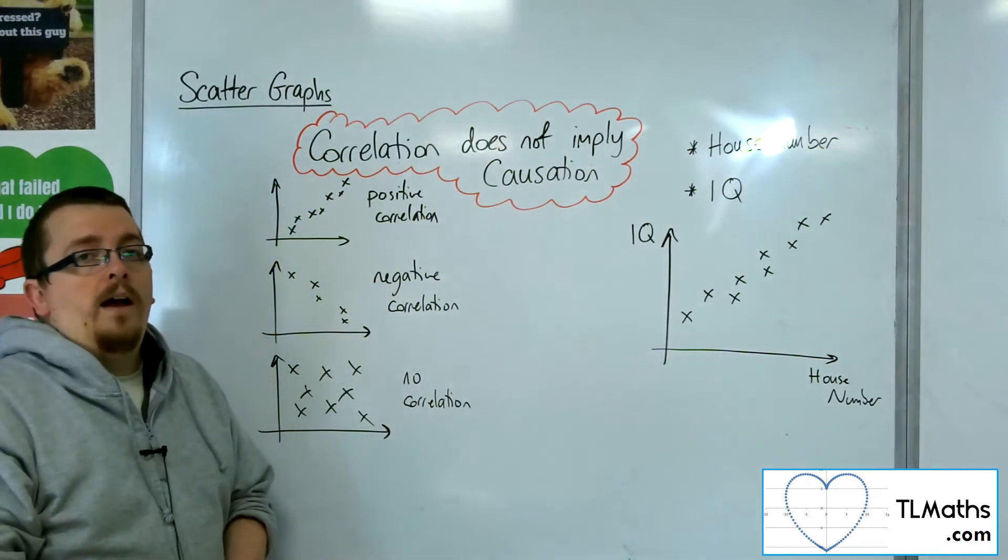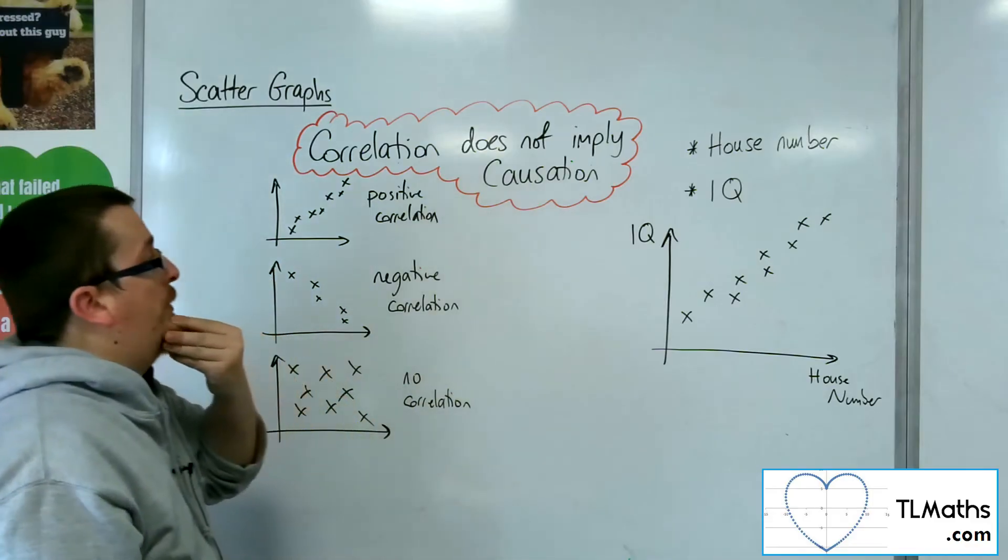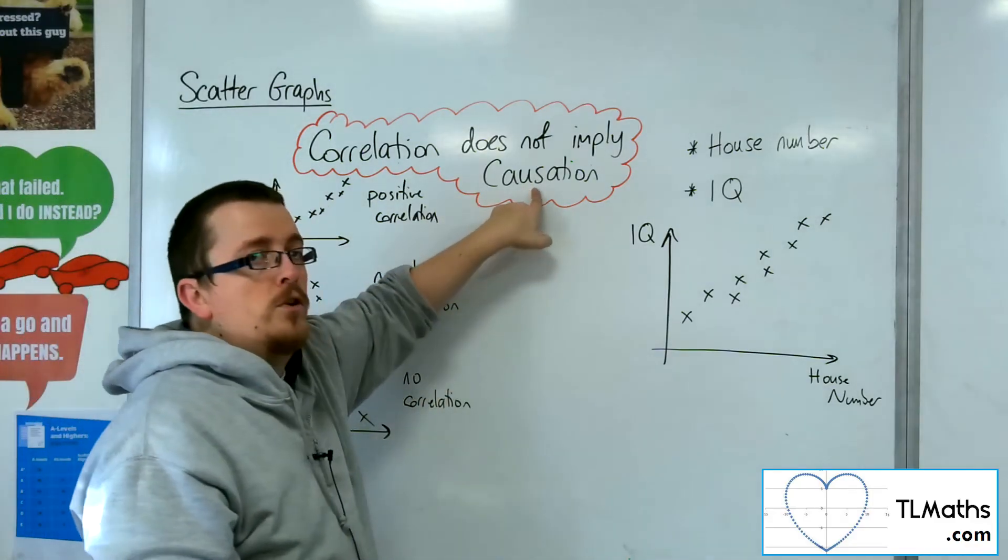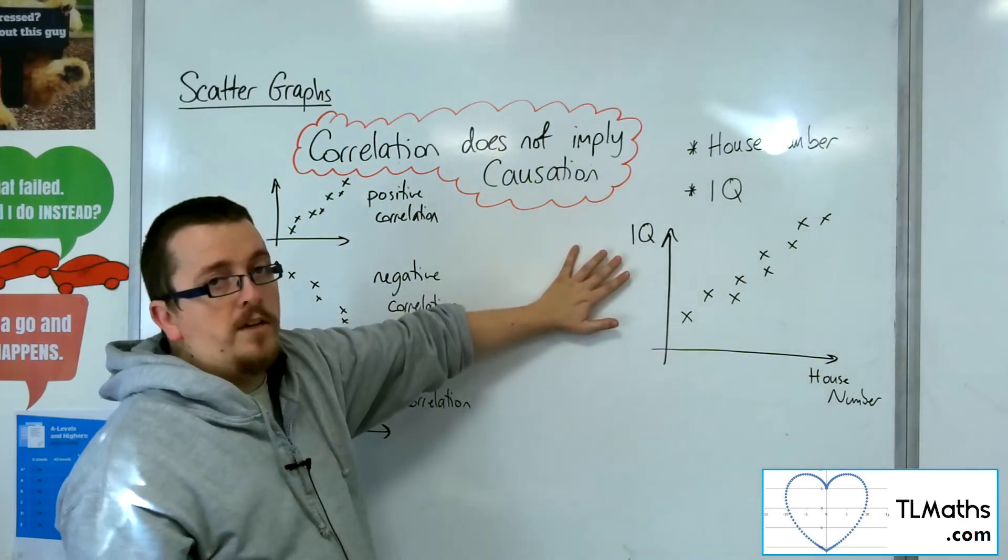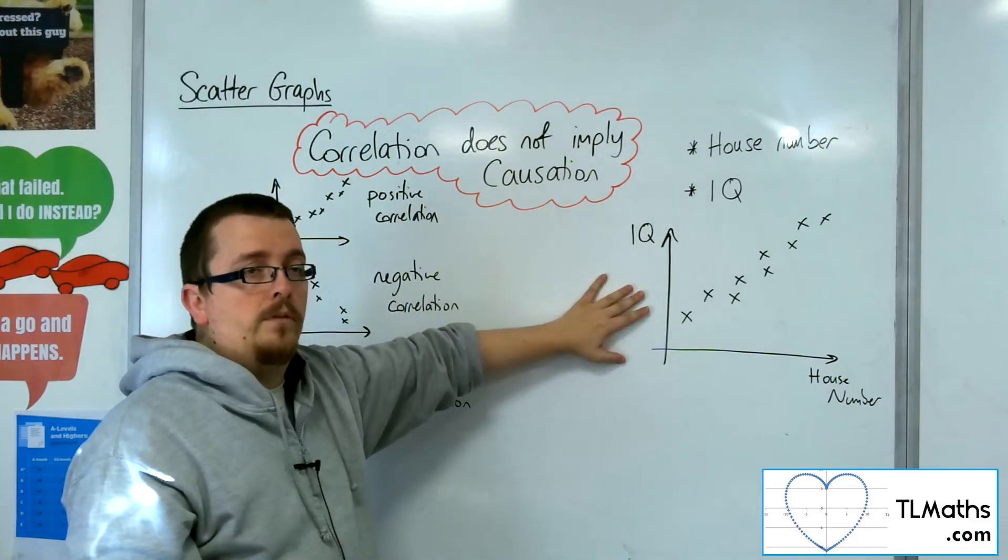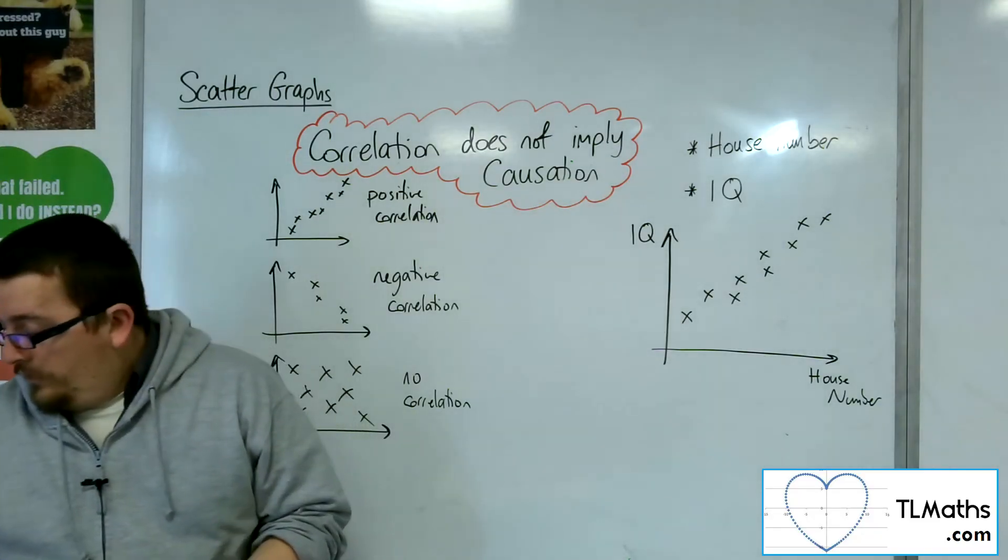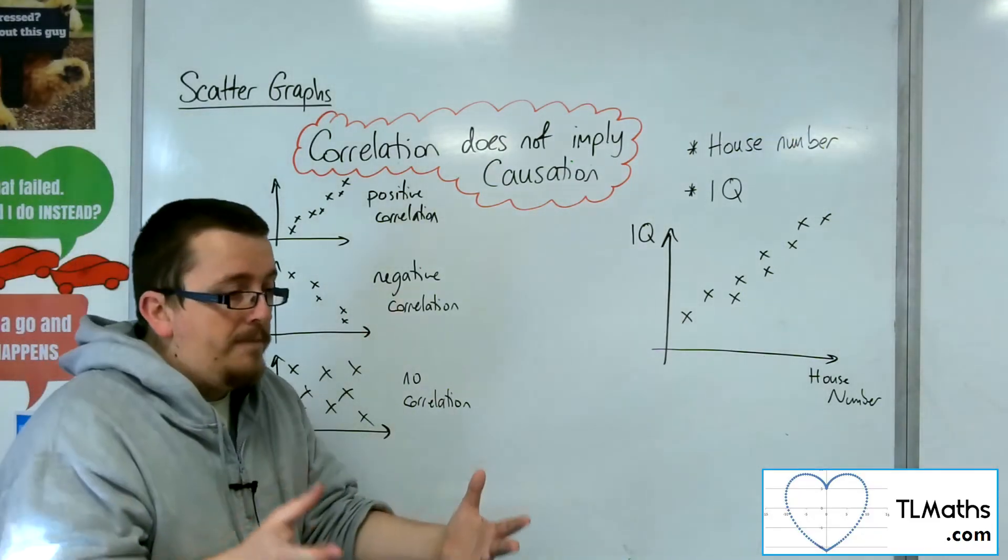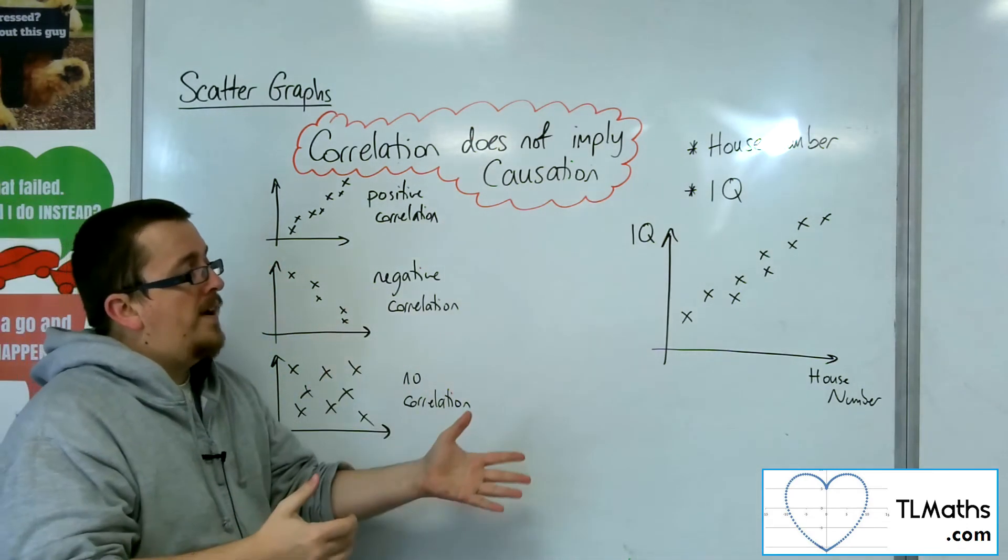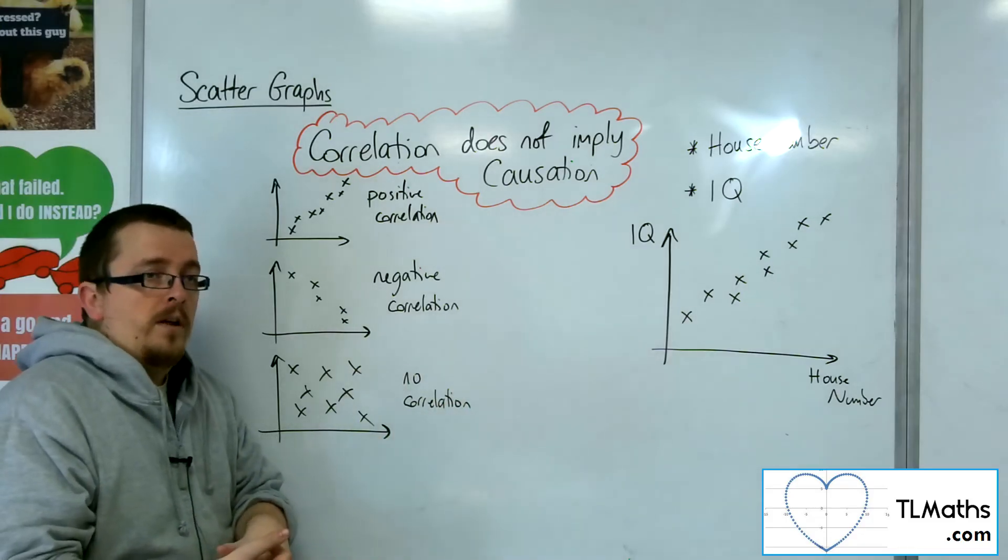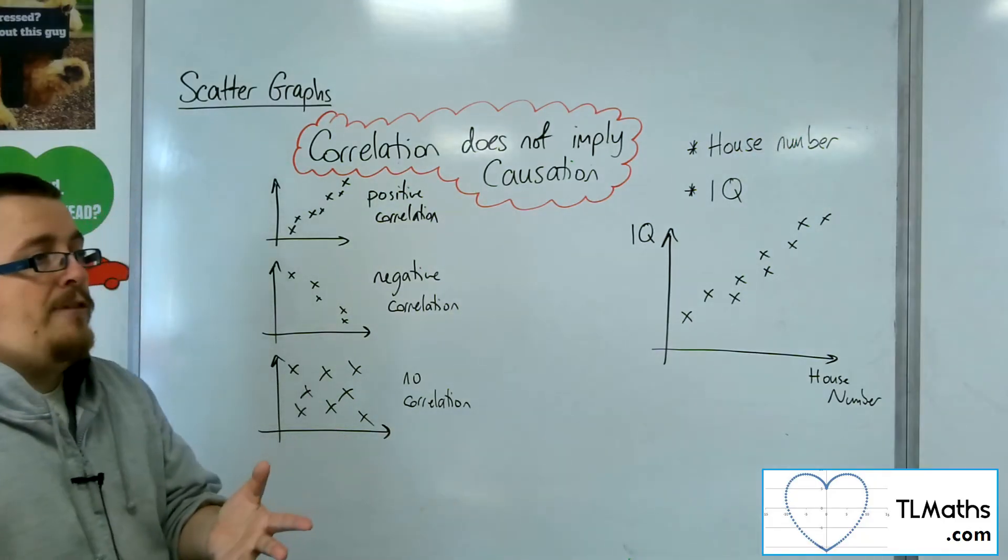that doesn't mean that one causes the other. The idea that the higher the house number, the higher the IQ is nonsense. So this is a very important statement, and this is the thing: if you went out into the workplace and you plotted a scattergraph and you found a positive correlation, it may well be that the two things are connected.